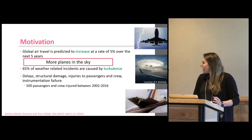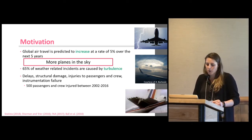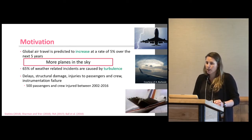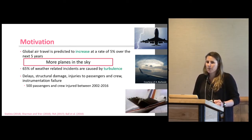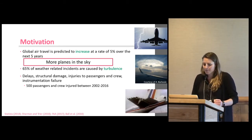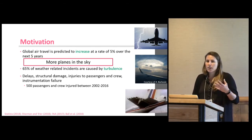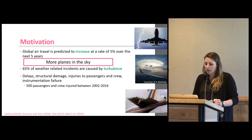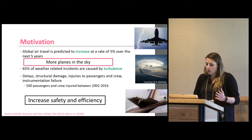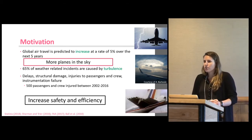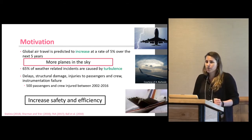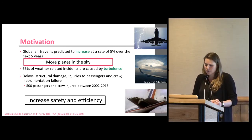Over the past 15 years or so, there were 500 passengers and crew injured due to turbulence. That might not seem like a lot, but when you put a monetary value on dealing with their injuries, it's a pretty big deal. So the goal of this research is to increase safety and efficiency when we have more planes in the sky in different regions.